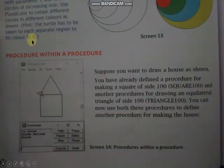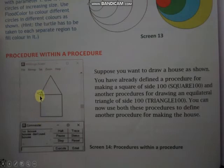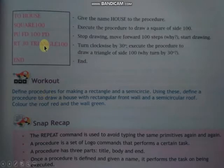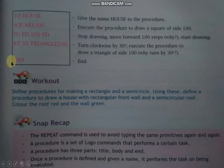जब हमारा square यहाँ से draw होगा तो last में हमारा turtle यहाँ पर होगा। यहाँ से हमें triangle draw करना है, इसलिए 100 steps move होगा। इसलिए हम PU command use कर रहे हैं, क्योंकि अगर PU command use नहीं किया तो again a line draw होगी। Then FD 100, then PD again — इसलिए drawing होगी। Then RT 30 — इसलिए turtle का angle change होगा। Then TRIANGLE 100, and end procedure.